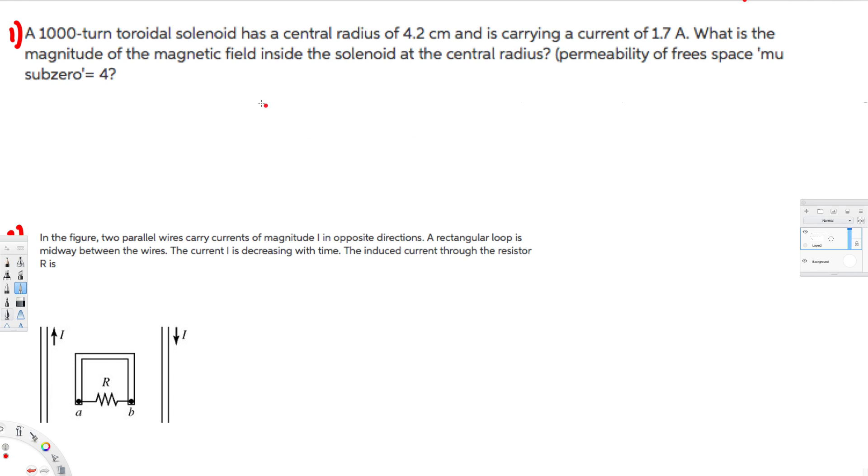First of all, they are asking for magnetic field, so let's put the magnetic field equation first. We know that B is equal to N μ₀ I over L. N is the number of turns, μ₀ is the permeability constant, I is current, and L is the length.